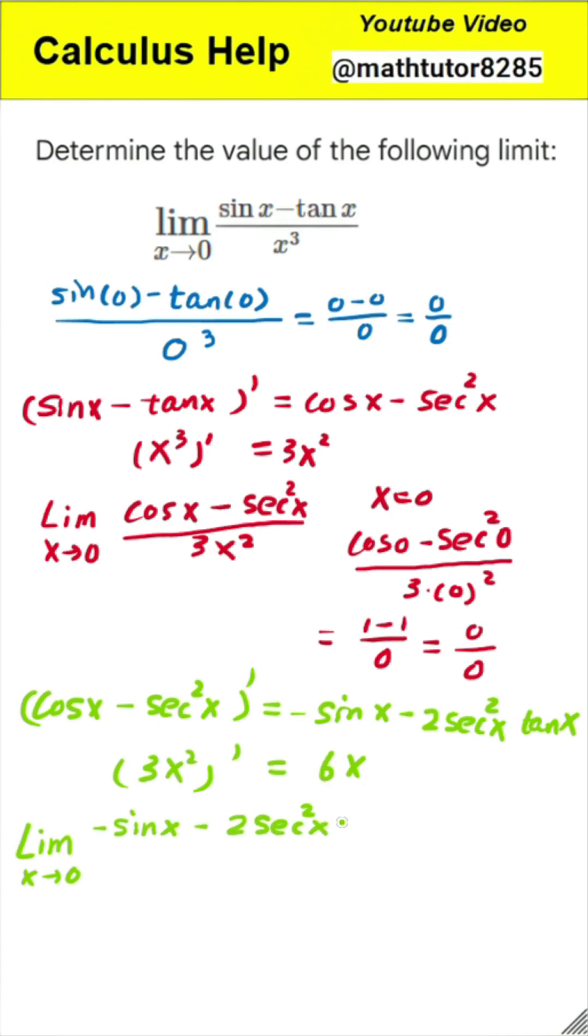Checking this limit at x equals 0 gives us negative sine of 0 minus 2 times secant squared of 0 times tangent of 0 in the numerator, which equals 0. The denominator is 6 times 0, which is also 0. We still have 0 divided by 0, so we must apply the rule one last time.